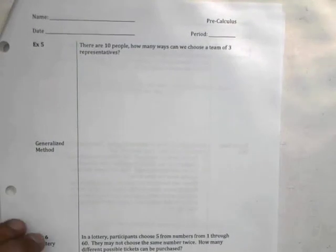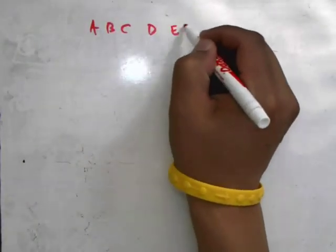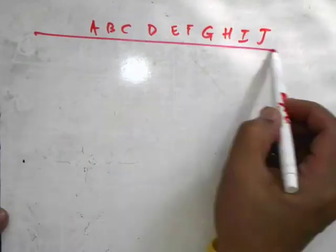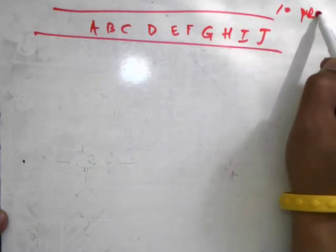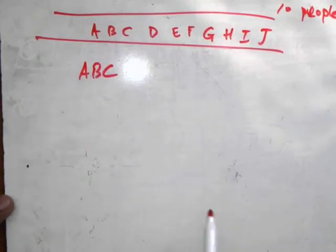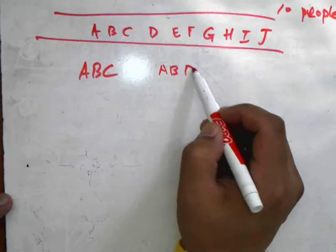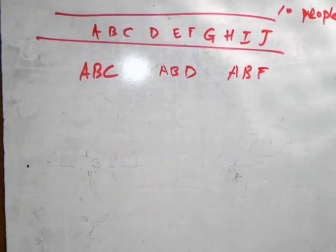We can always list this. We have A, B, C, D, E, F, G, H, I, J - those are the names of the 10 people. How many ways can we arrange these people? Well, I can pick a team that has A, B, C on it, then I can pick a team that has A, B, D, or a team that has A, B, F, and so on. There's a lot of different choices here.